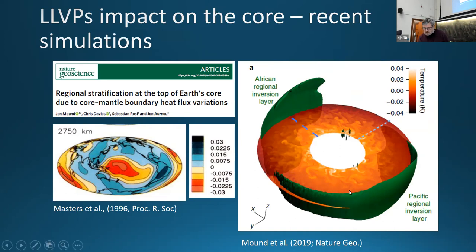These were basically formed by the LLVPs where the heat flow was very low because the overlying mantle was very hot. The heat couldn't go anywhere. This core fluid just sat there hot. They call them the regional inversion layers.